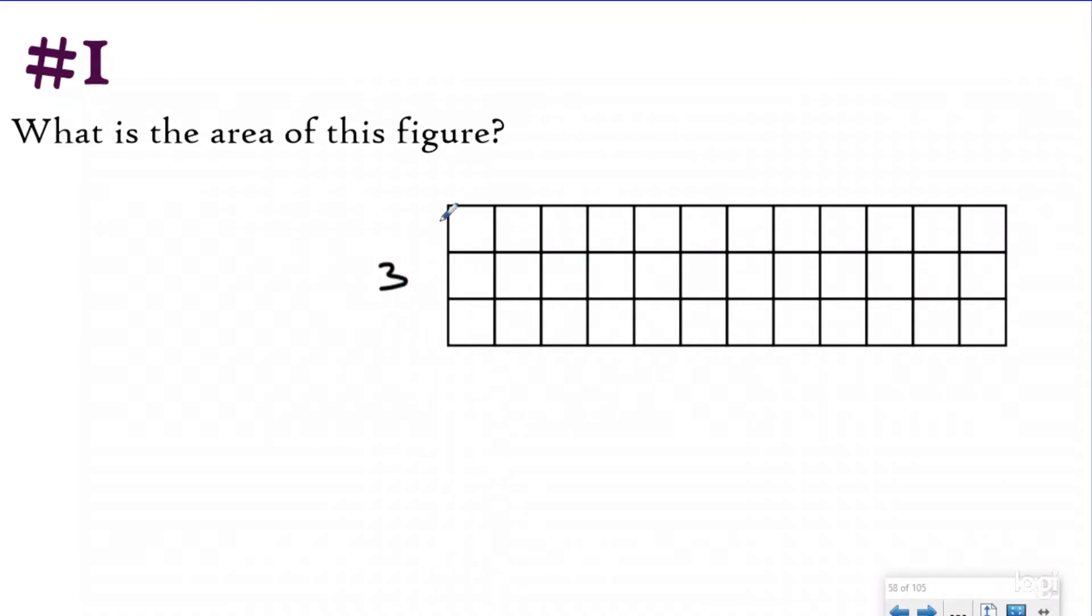I know that my width is three units and my length is 1, 2, 3, 4, 5, 6, 7, 8, 9, 10, 11, 12 units. So my area formula, which is length times width, is going to be 12 groups of three. And my area for this rectangle is going to be 36 square units. Remember, you got to label your area with square units because you're covering them like an array.